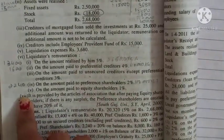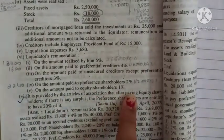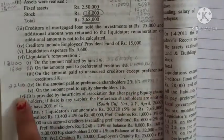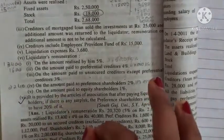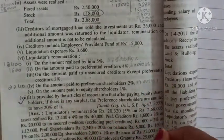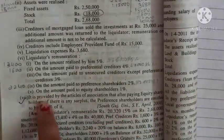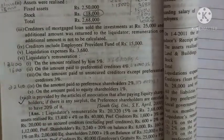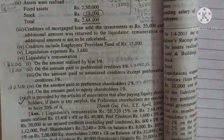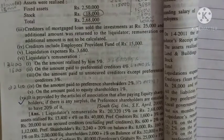There is an important point provided by the article of association: after paying the equity shareholders, if any surplus remains, preference shareholders are entitled to receive 20% of it. This is the most important point — if we have enough money remaining after payment to equity shareholders, that surplus gets distributed accordingly.